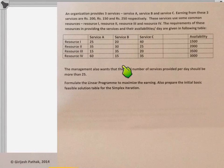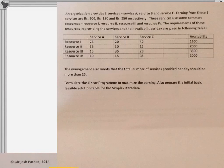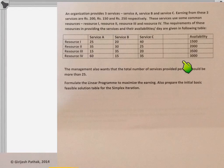Data are given here. The organization is providing three types of services: Service A, Service B, and Service C. Earning on these services are given here. There are few common resources, and their requirement and availability is given in this table. The management also wants that the total number of services provided per day should be more than 25.